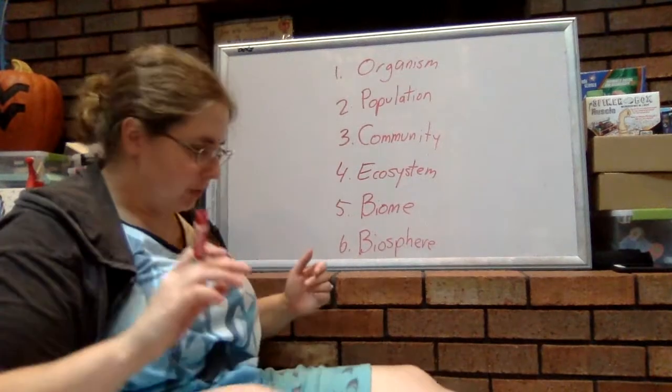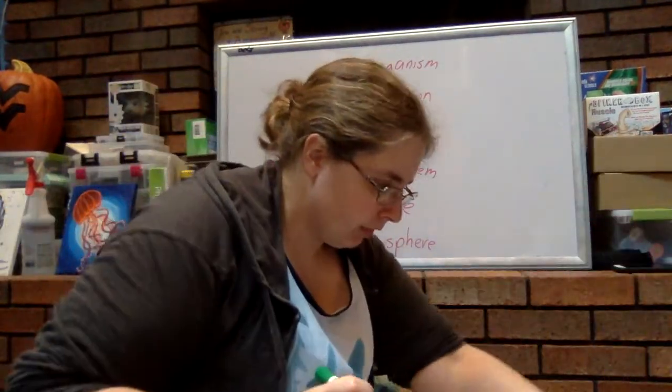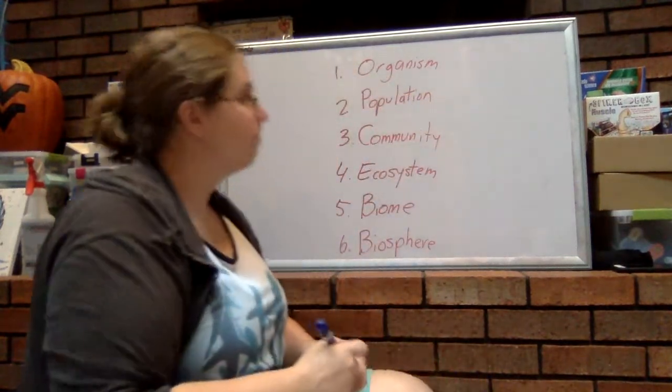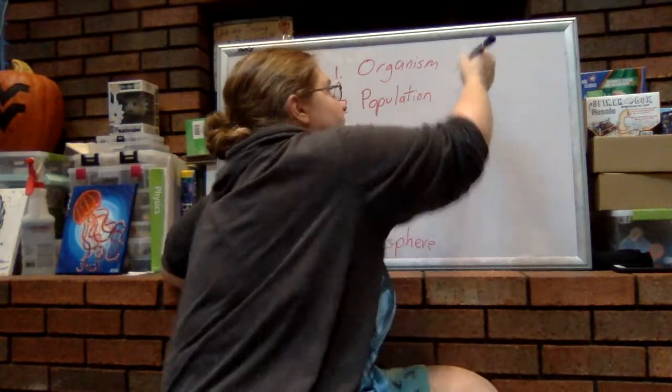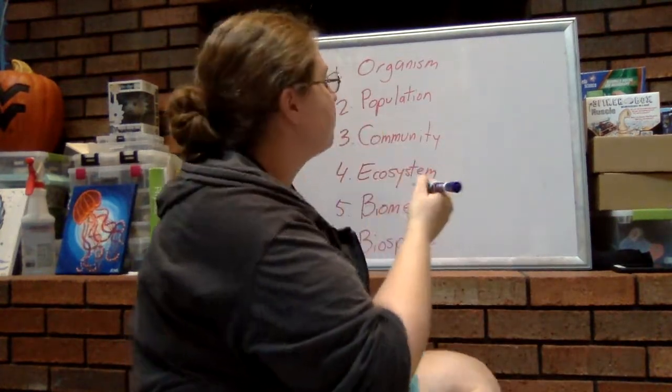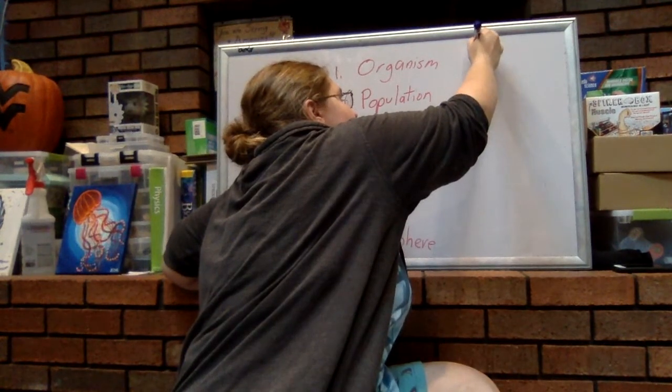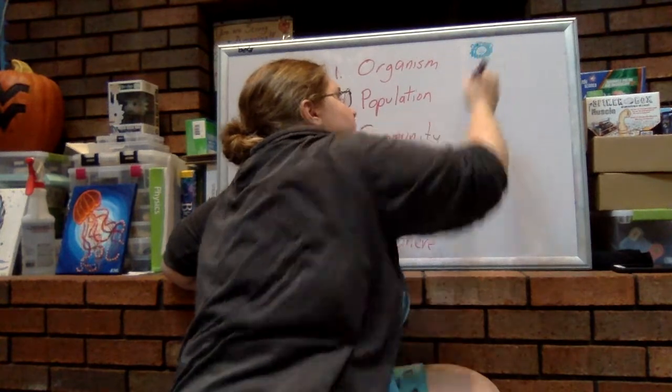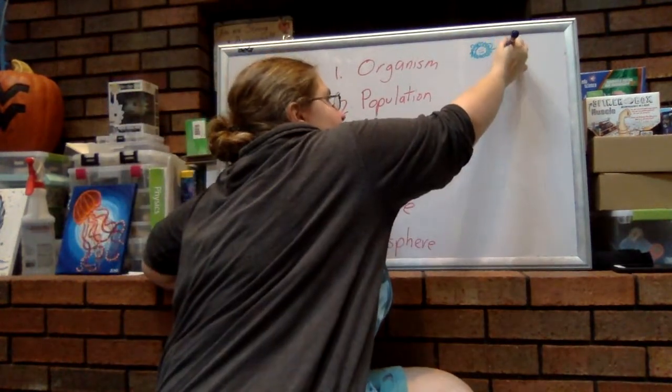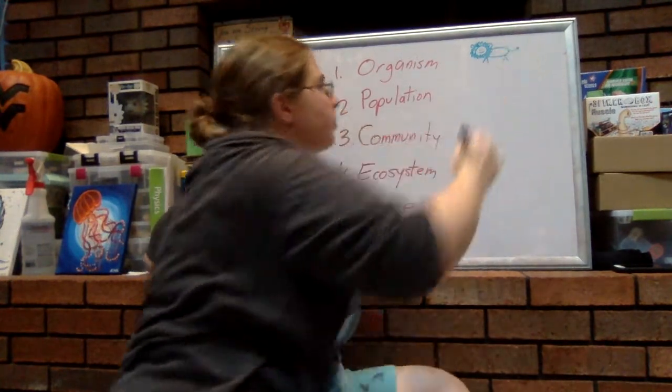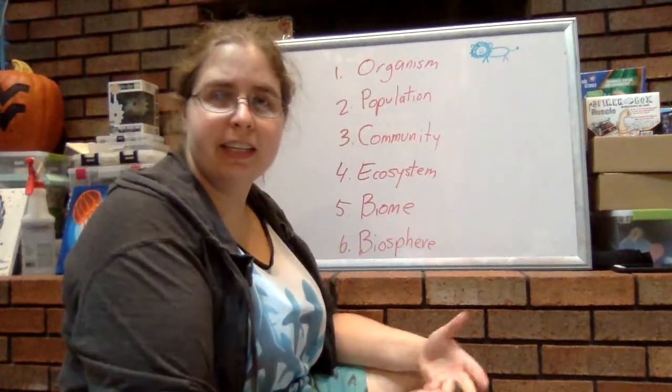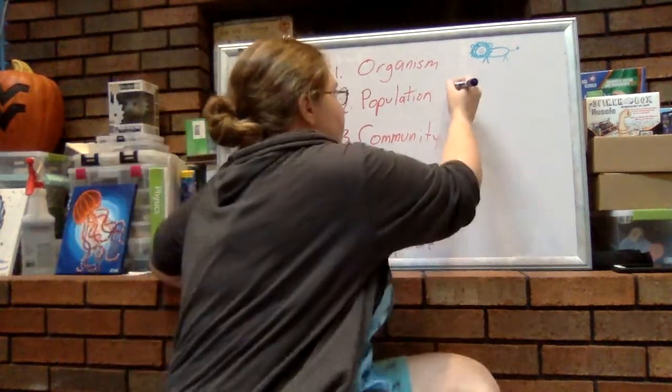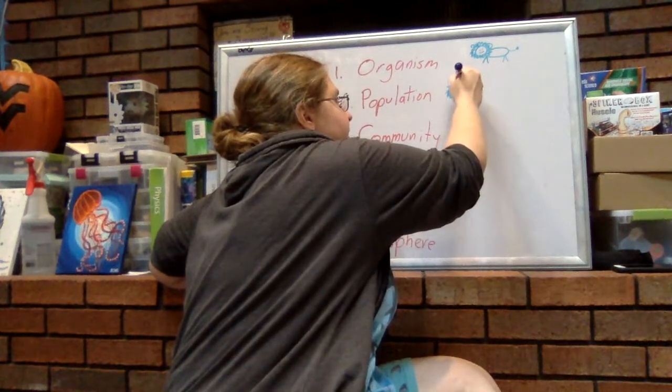So let's give some examples for this once I find the lid to my marker. There it is. Alright, so let's give some examples. Maybe we have a cute little wolf. Actually, you know, I'm going to use The Lion King as our example. So we have a lion. There's our lion. He is one living thing. Since he is one individual living thing, he is an organism.